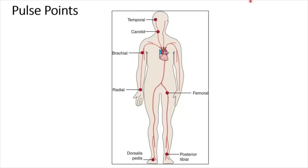Heart rate can be measured by counting the pulse. Pulse is the rhythmic bulging of the artery walls with each heartbeat during ventricular systole. Pulse can be felt by placing the tip of the pointer finger and index finger on the pulse points. The most commonly used pulse point is the radial pulse.